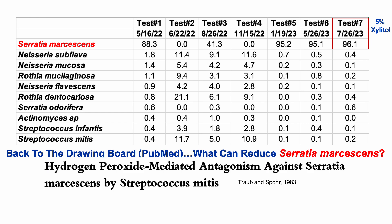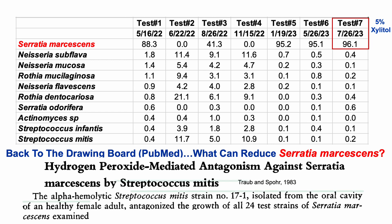I came across a paper that is 40 years old: hydrogen peroxide-mediated antagonism against Serratia marcescens by Streptococcus mitis. In other words, Streptococcus mitis, through hydrogen peroxide generation, can inhibit growth of Serratia marcescens. From a screenshot of that paper, we can see that Streptococcus mitis strain 17-1 antagonized the growth of 24 different test strains of Serratia marcescens — very good news.